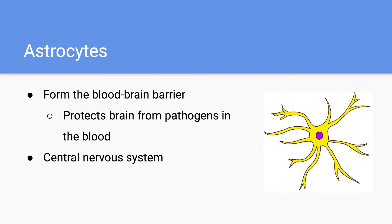Let's start off with astrocytes. Astrocytes are responsible for forming the blood-brain barrier. The blood-brain barrier is essential because it protects the brain from pathogens in the blood. Certain substances like carbon dioxide and oxygen are allowed to pass, whereas toxins that would hurt the brain and the overall central nervous system are kept out. Since astrocytes are involved with the brain, they're part of the central nervous system.